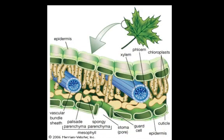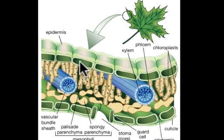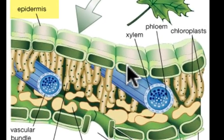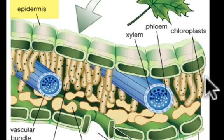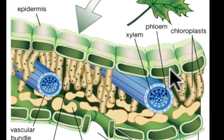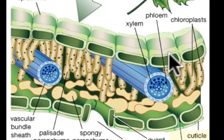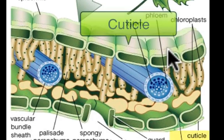If we take a cross section of the leaf and look at the cell layers, here you see a top layer of cells called the epidermis. It's typically one cell layer thick, and the epidermis is on the top of the leaf as well as on the bottom — so we have an upper epidermis and a lower epidermis. These cells secrete a waxy substance called the cuticle, and the cuticle keeps the leaf from drying out.